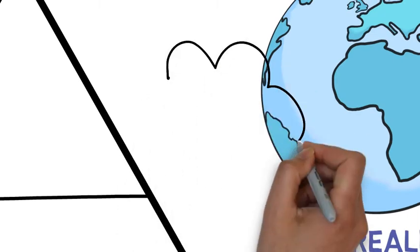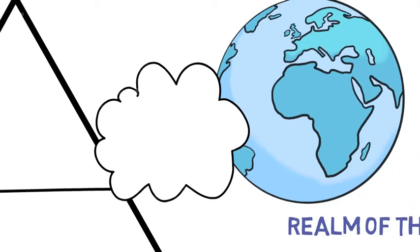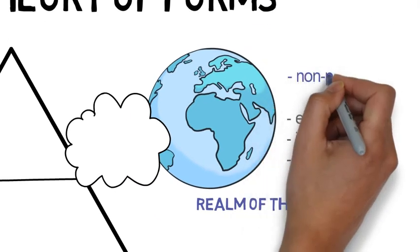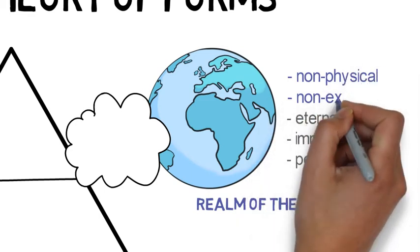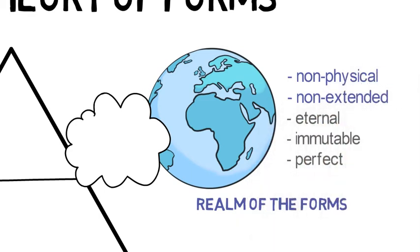Now forms are like ideas. They are non-physical, they are eternal, perfect, and unchanging, and they are non-extended, meaning they don't occupy space, otherwise they would be able to change.